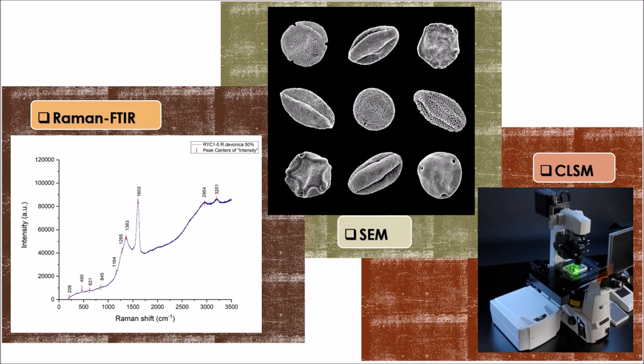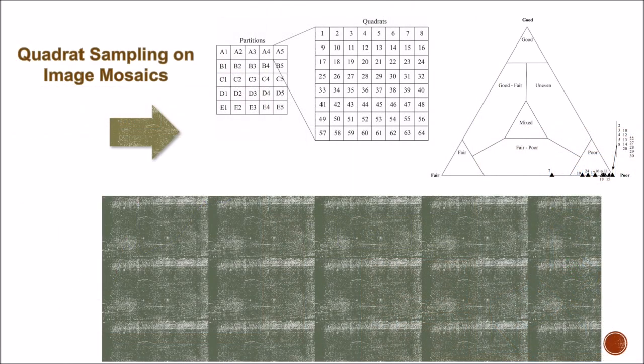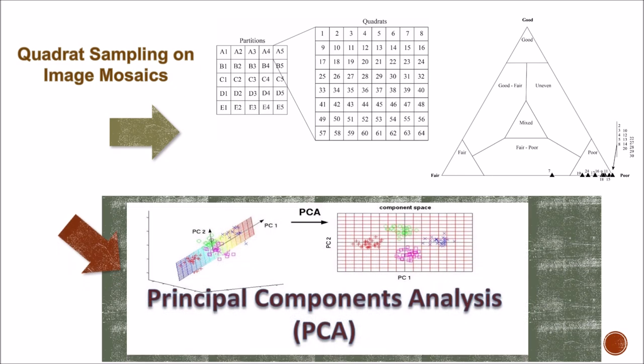Although some Raman tests have already been performed, a further comparison among different types of fossils needs to be achieved to report the results. Finally, we will apply quadrat sampling on image mosaics to make a taphonomic analysis of the samples, as well as a principal component analysis using the Raman signatures corresponding to our fossil microbes as a way to observe possible differences between different taxa.